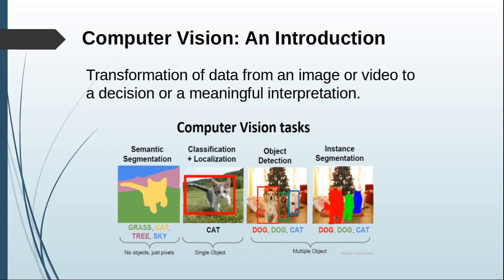Next comes instance segmentation, which can be considered as a slight extension to semantic segmentation. After labeling each pixel as to the object that it belongs to, we can also group them so that we come to know the number of instances of a particular class present within an image. So if we want to know how many dogs or how many cats are there, we can easily identify from that grouped pixel. This is the goal of instance segmentation.